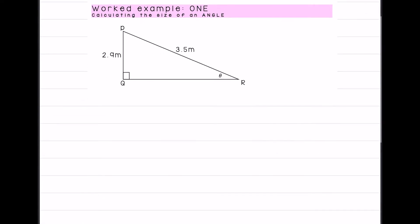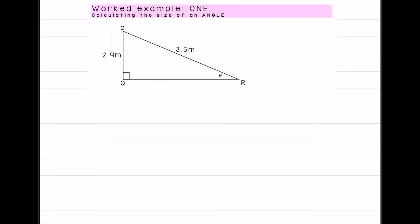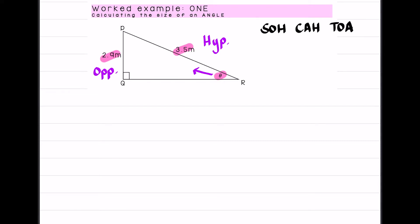So if we look at this triangle, it starts very similarly to what we have been doing. I look and I'm given angle r, but angle r is now unknown — angle r is theta. PQ and PR are given. Based on that angle, the 3.5 is the hypotenuse because it's the side opposite the right angle, and PQ is opposite the angle. So using SOH-CAH-TOA — some old hens cackle and howl till old age — I've got the opposite and the hypotenuse, which means I'm going to use sin.